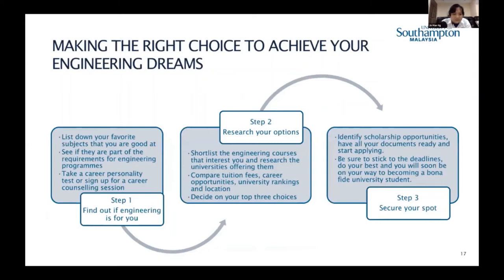What are the steps to achieve your engineering dreams? Step one: find out if engineering is for you. List your favorite subjects — if they include mathematics, physics, chemistry, or English, you're already one foot into engineering. Check if your current subjects meet the requirements of your chosen engineering program. If still unsure, go to a career center, take a personality test, seek career counseling, or contact academics at the University of Southampton Malaysia.